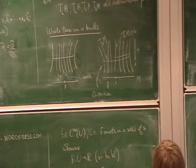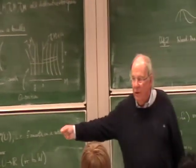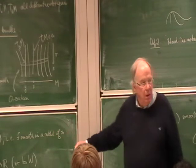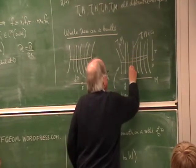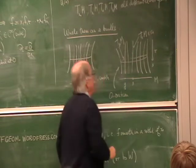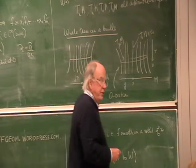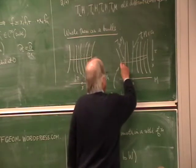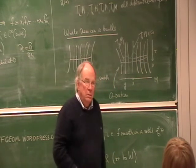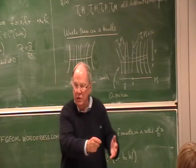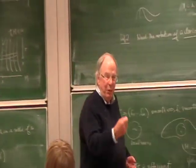We talked about a tangent vector and where it lives. Here is a tangent vector over x. Somebody had the good idea of saying what a vector field is: a vector field is just a field of tangents that moves smoothly. Is that not what a vector field is? It's a smooth variation of tangents — at each point it is tangent.